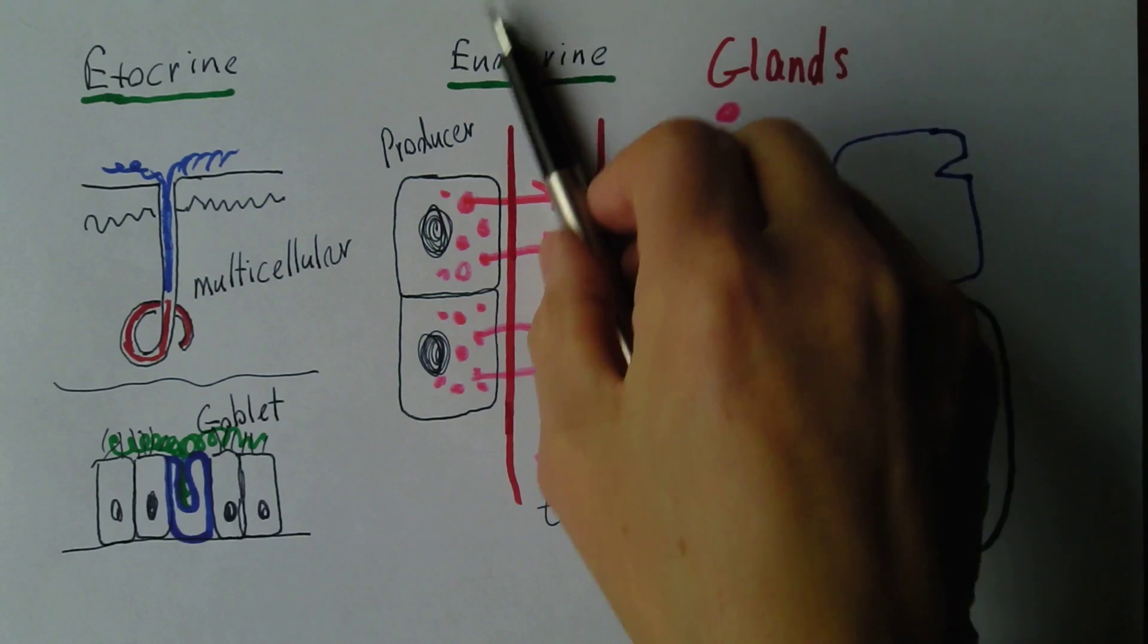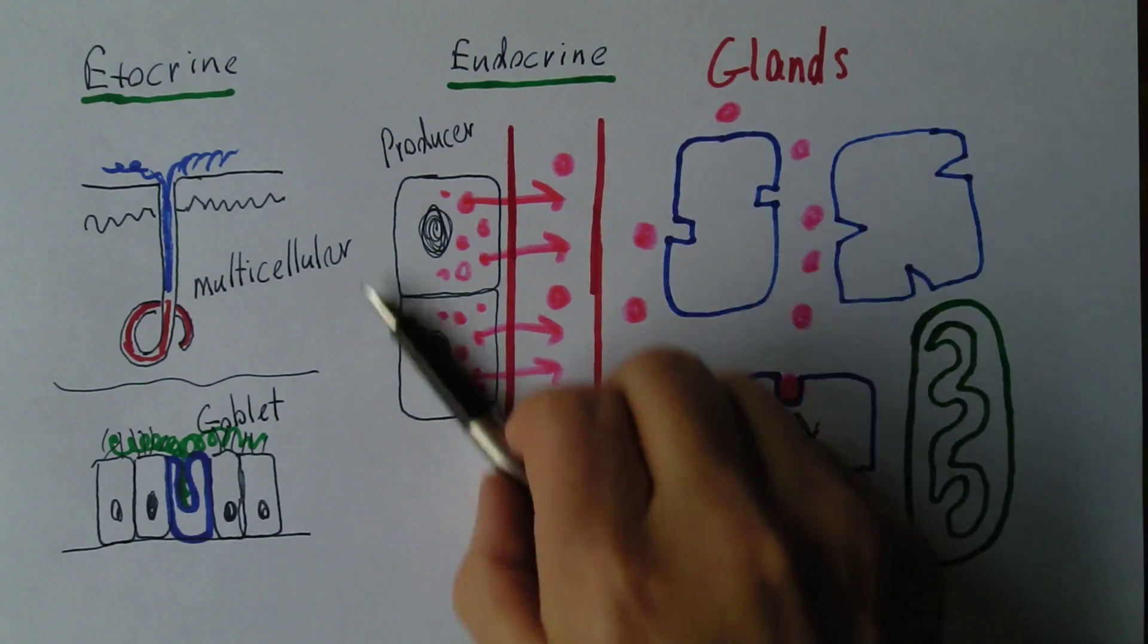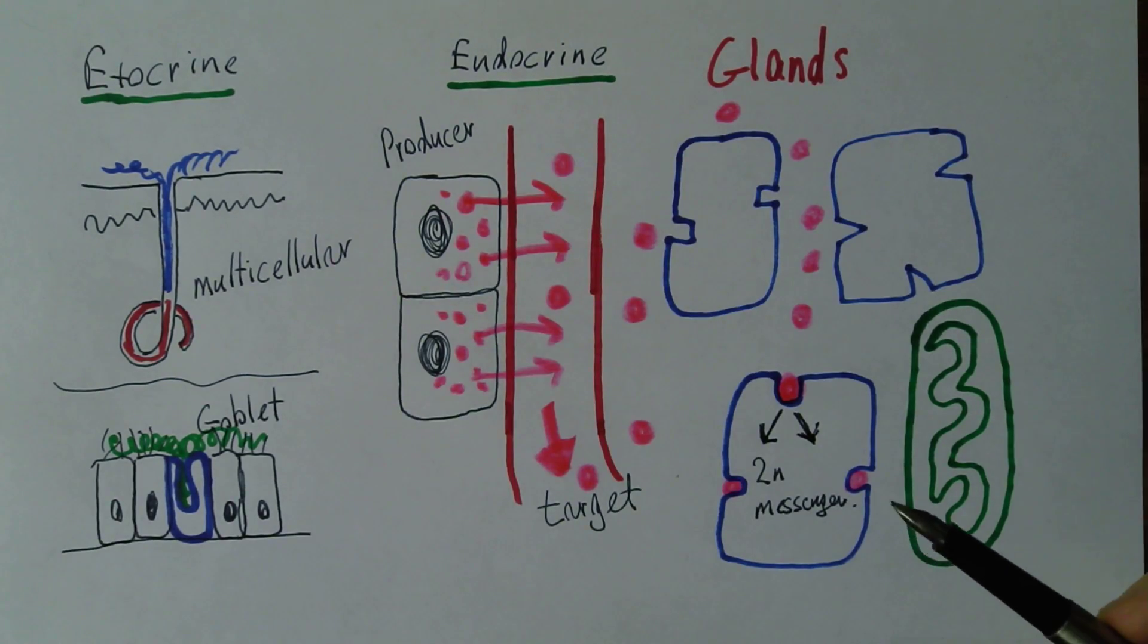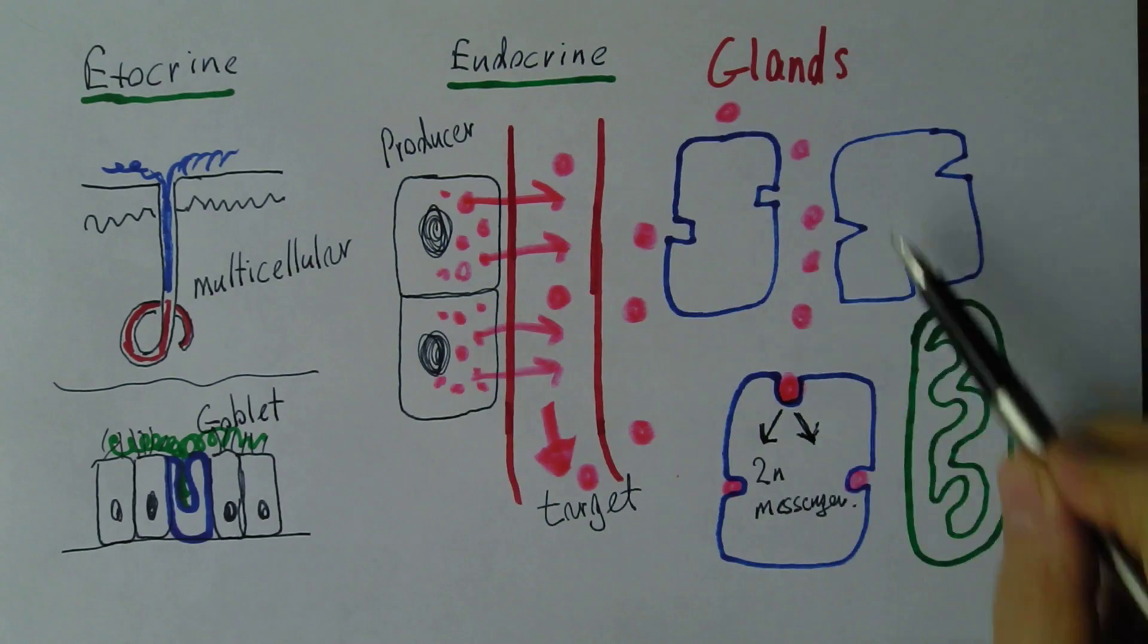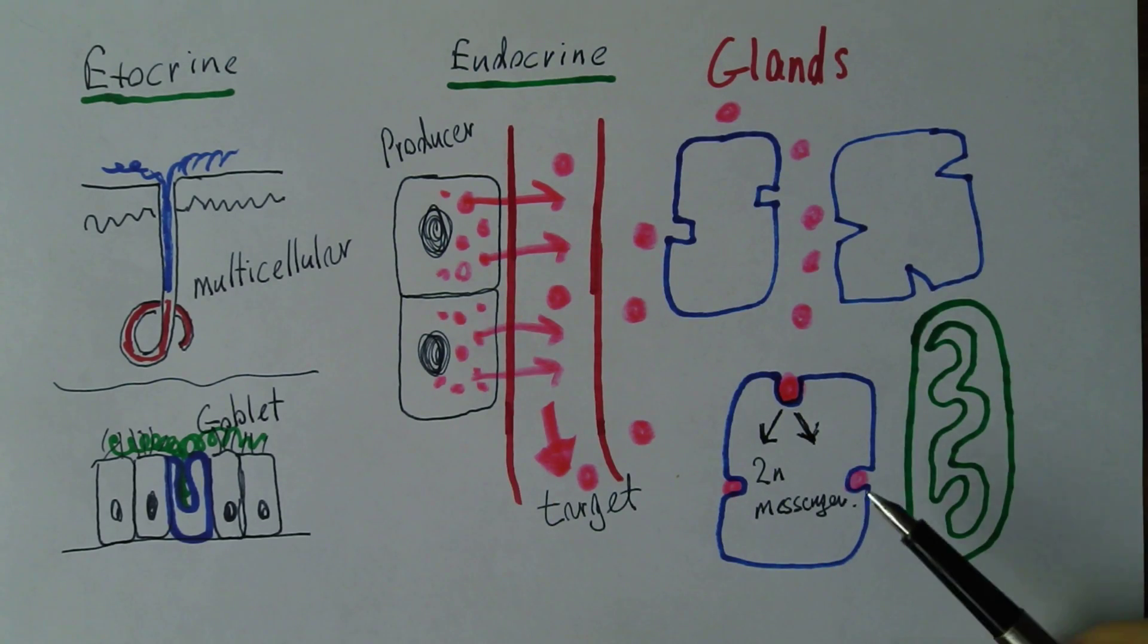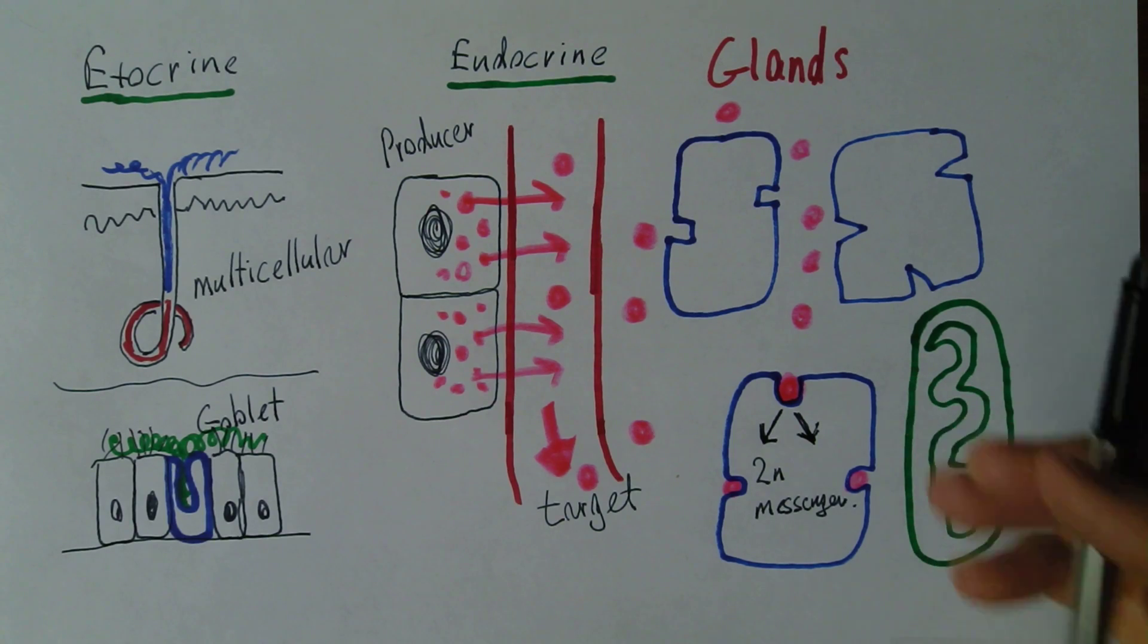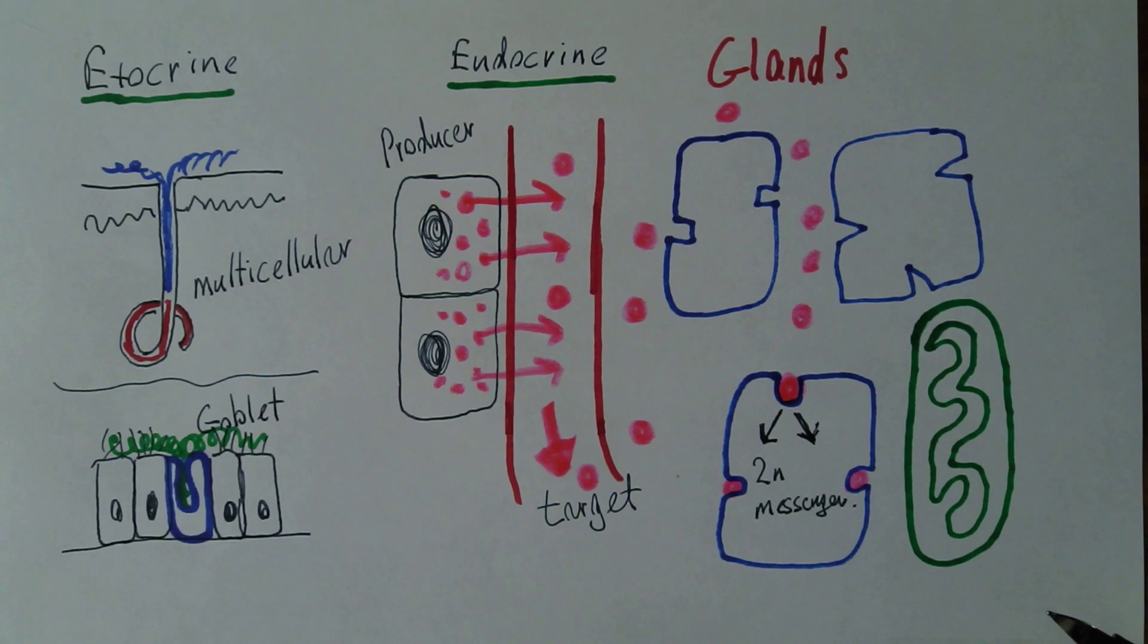And this can take a little bit of time. So it's not like the nervous system that works essentially instantly. This can work over time, and the effects can be somewhat prolonged. But the aim is to have physiological coordination of the body. The whole body needs to be coordinated. The 75 trillion cells or whatever it is in the body need to be doing the right thing at the right time.